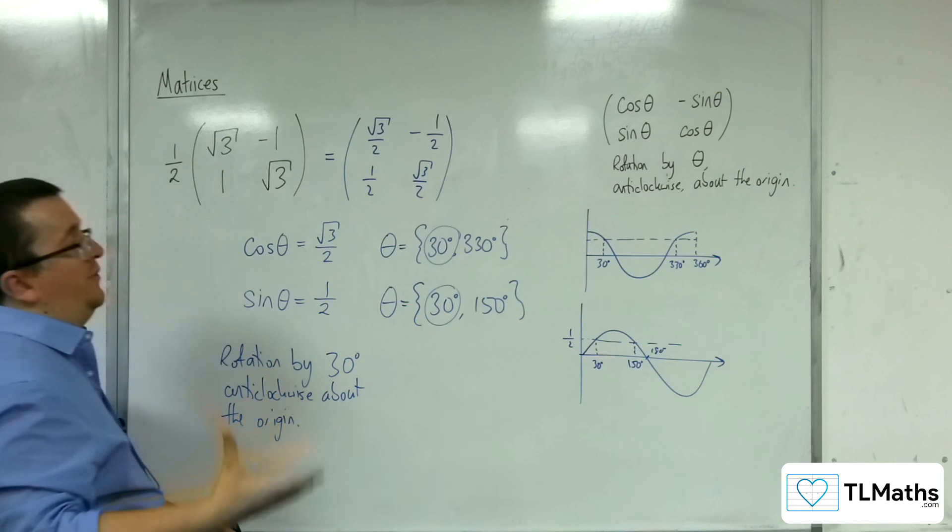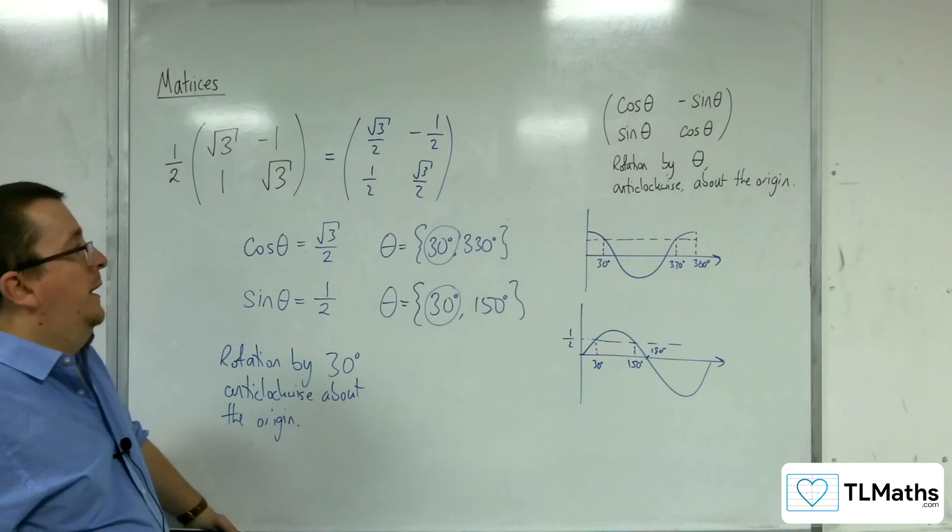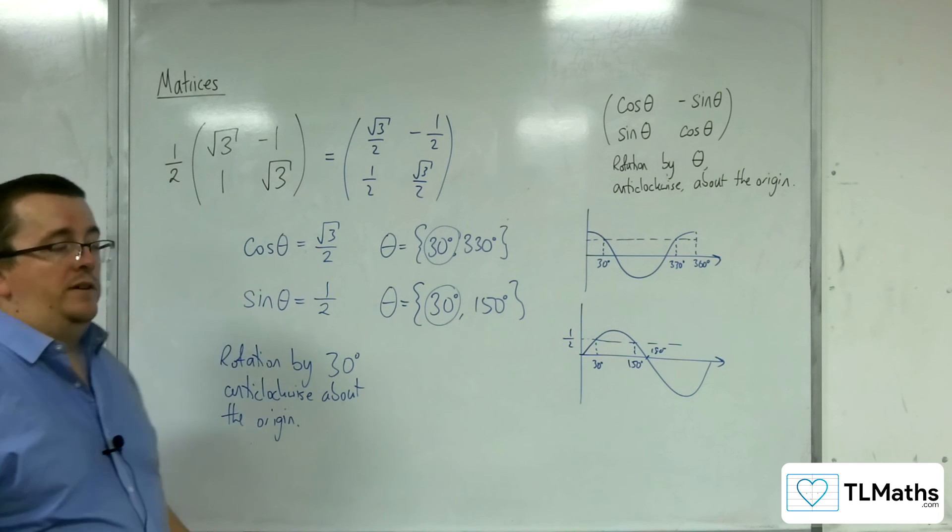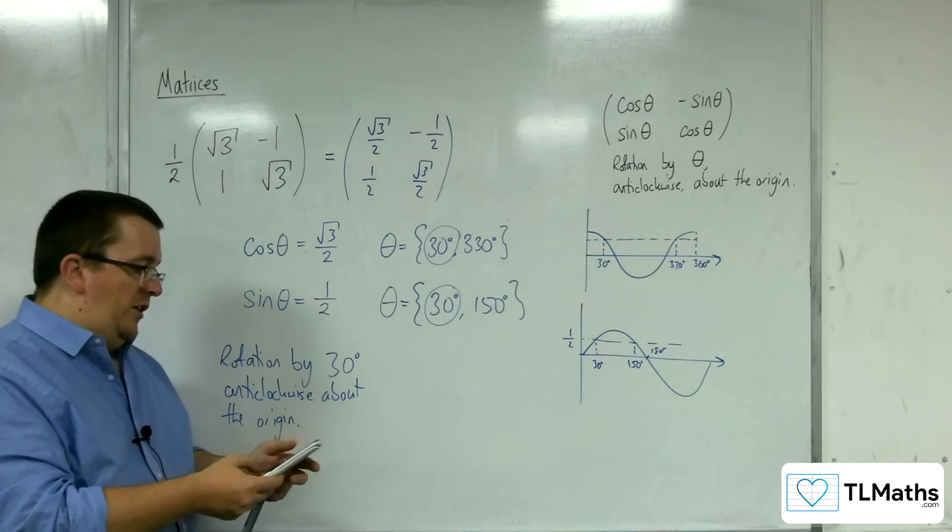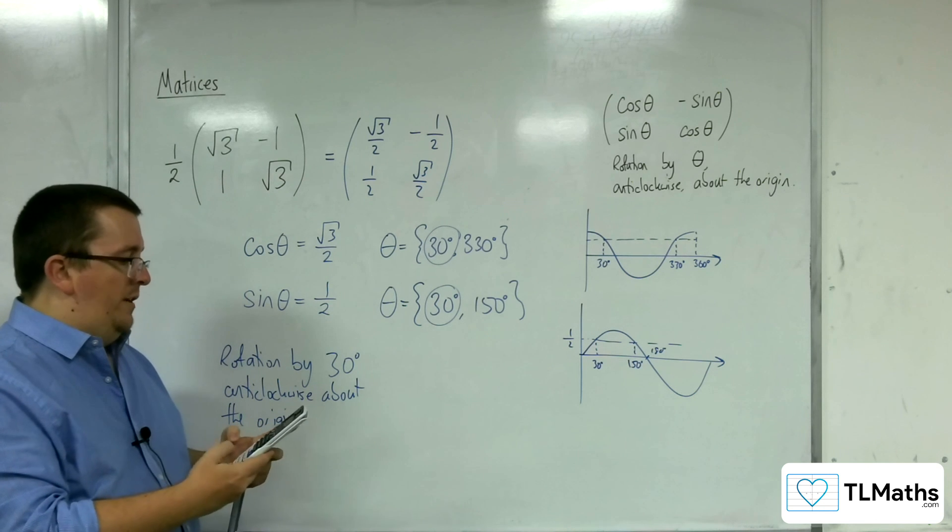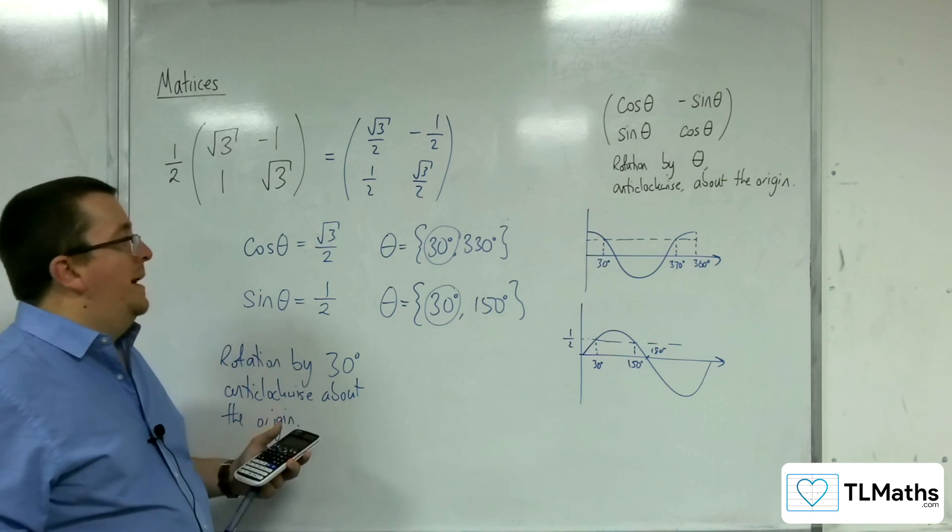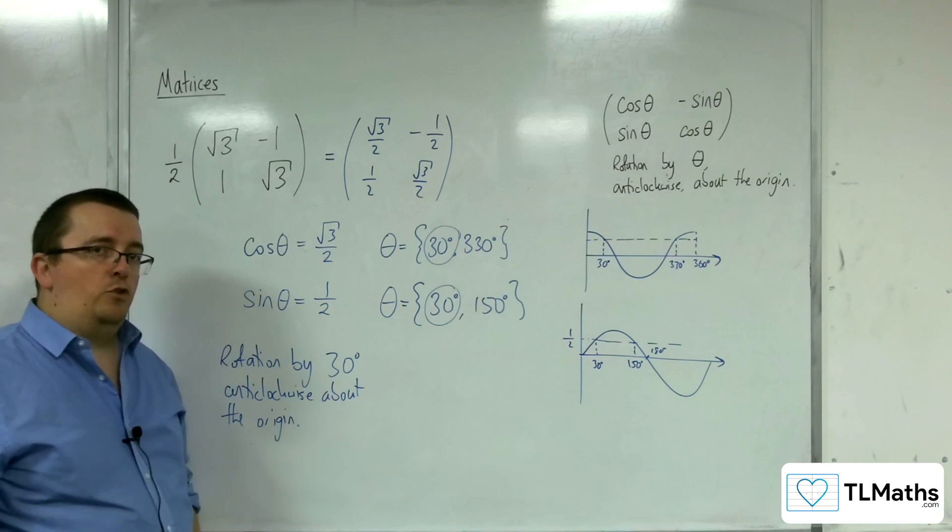So, for example, I know it's not a rotation by 330 degrees anticlockwise about the origin, because 330 degrees is not a solution of sine theta equals a half. So, if I type in sine of 330 degrees, I get negative a half, so it would be a different matrix if it was a rotation by that angle rather than the 30 degrees.